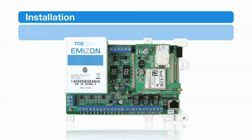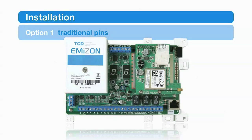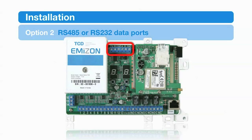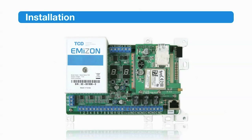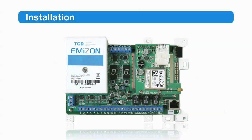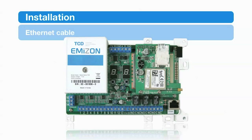Now let's install the TCD in the control panel. You have three options. Option one is to use traditional pins — the TCD has 16, so no need for additional extension boards. A quicker option is to use the RS-485 or RS-232 data port; use this for the upload-download facility and to send SIA data to your monitoring centre. The third option is dial capture, which provides an easy digital upgrade route for dialers that connect to an analogue phone line.